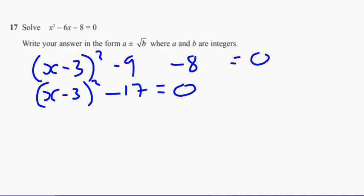Okay, so let's add 17 to both sides. Let's do one thing at a time. We're going to add 17. That's nice. Now we're going to square root both sides.